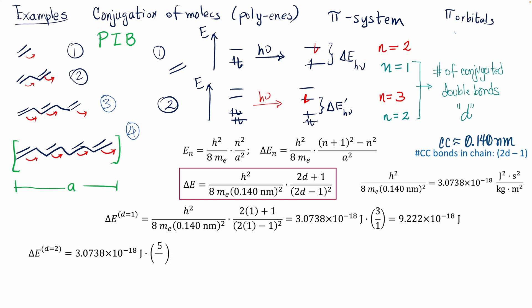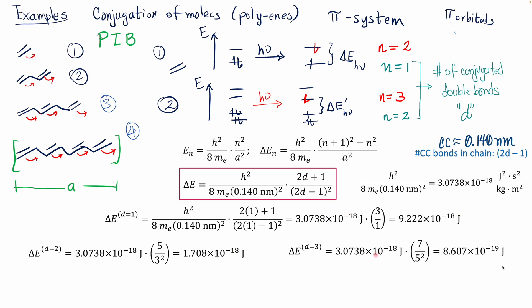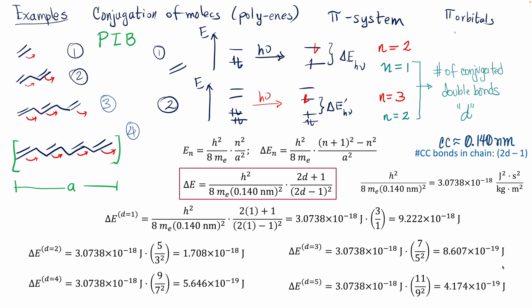For two double bonds: numerator is 2×2+1 = 5, denominator is (2×2−1)² = 9, giving approximately 1.7×10⁻¹⁸ joules. For three double bonds the same substitution gives a lower value, and similarly for four and five double bonds. The trend is clear: as the number of double bonds increases, the transition energy decreases.